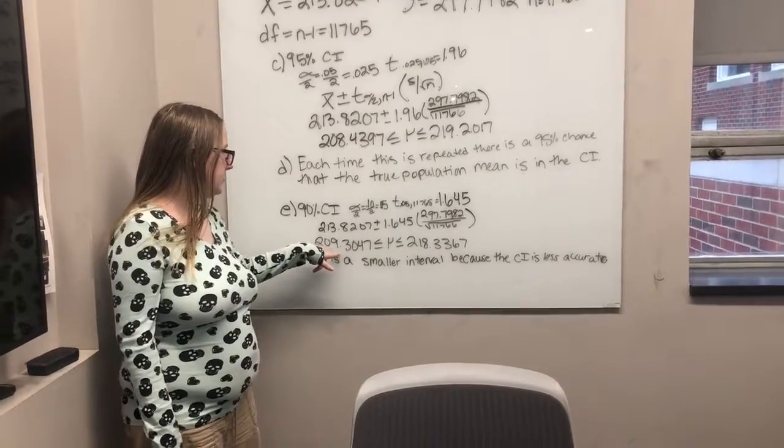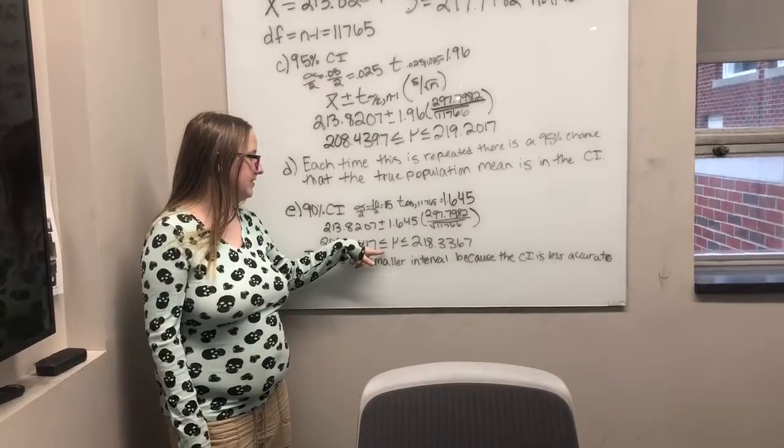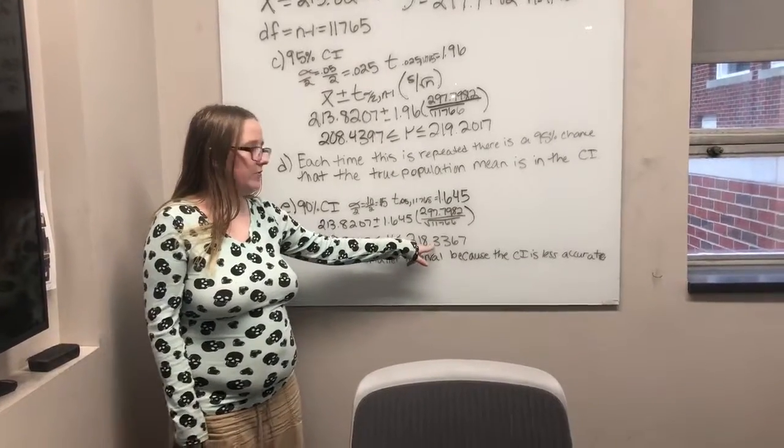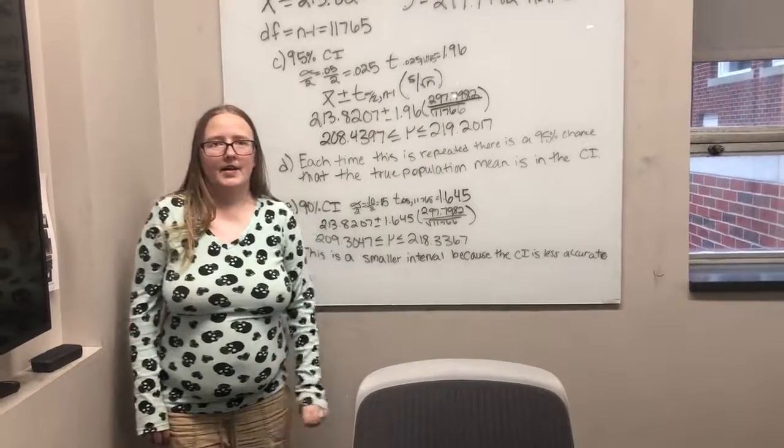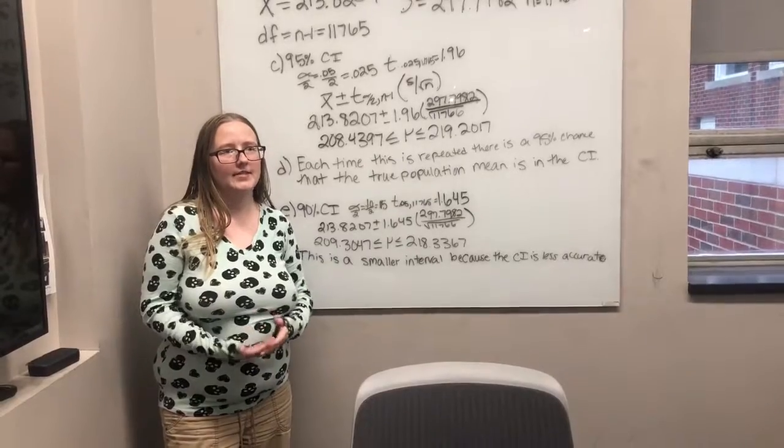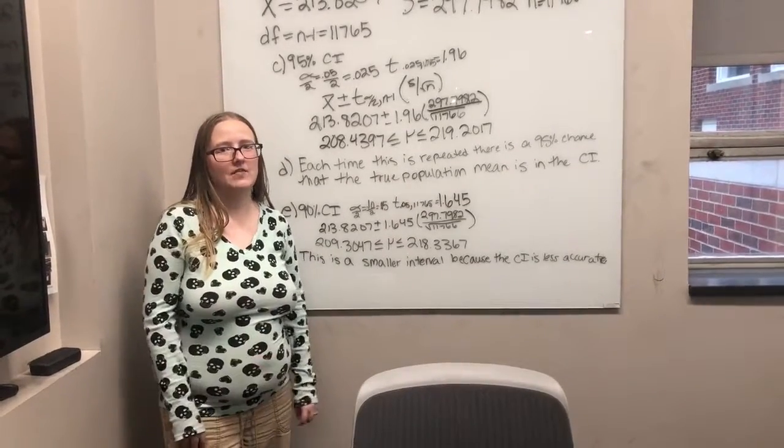And we got 209.3047 is less than or equal to mu, it's less than or equal to 218.3367. And that is a smaller interval because we're not as accurate in a 90% confidence interval as we are in a 95% confidence interval.